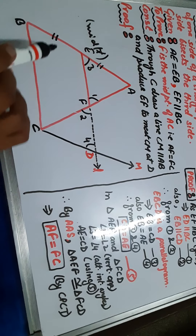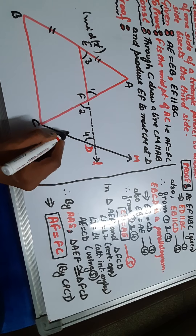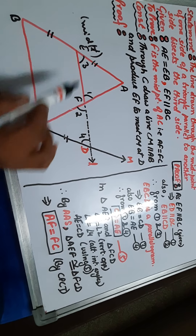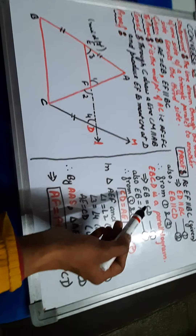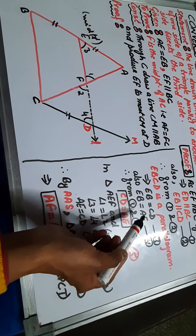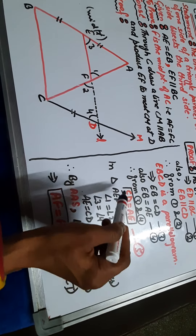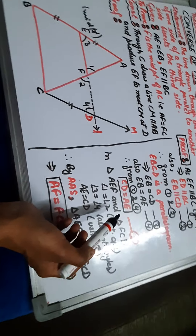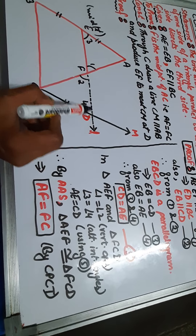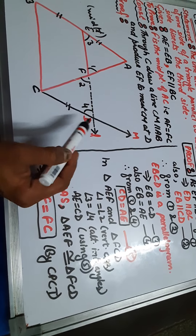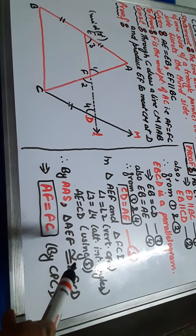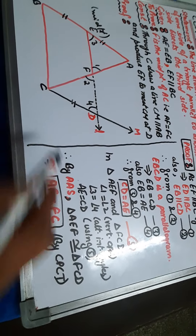Since EBCD is a parallelogram, its opposite sides are equal. So EB is equal to CD. But EB is also equal to AE (since E is the midpoint). Therefore AE is also equal to CD. Now in triangle AEF and triangle FCD: angle 1 is equal to angle 2 (vertically opposite angles), angle 3 is equal to angle 4 (alternate interior angles), and AE is equal to CD (proved above). Therefore by AAS, the two triangles are congruent, and AF is equal to FC by CPCT.